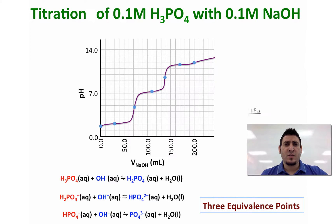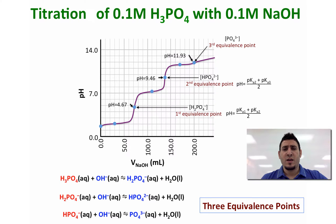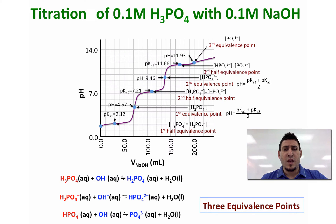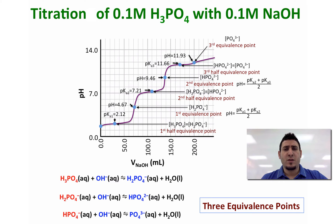You can see that phosphoric acid has three equivalence points where the pH values are 4.67, 9.46, and 11.93. The pH curve also has three half-equivalence points, and at each half-equivalence point the pH equals the corresponding pKa — so the first half-equivalence point gives pKa1, the second gives pKa2, and the third gives pKa3.